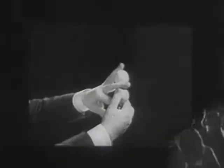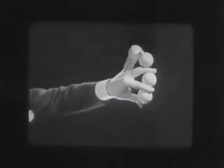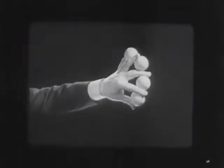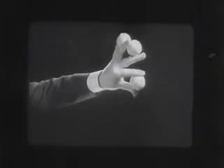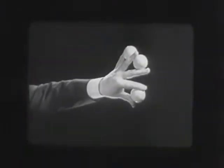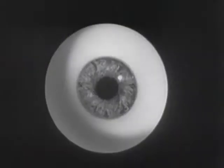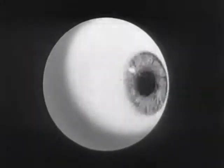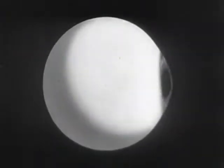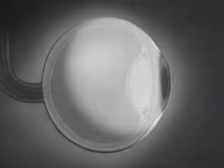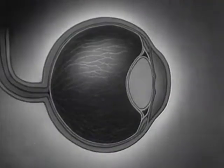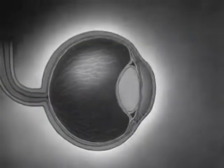Motion pictures are based on an optical illusion — just another case where seeing is believing. To understand how we see, let's turn the tables on the human eye and look at it instead of through it.